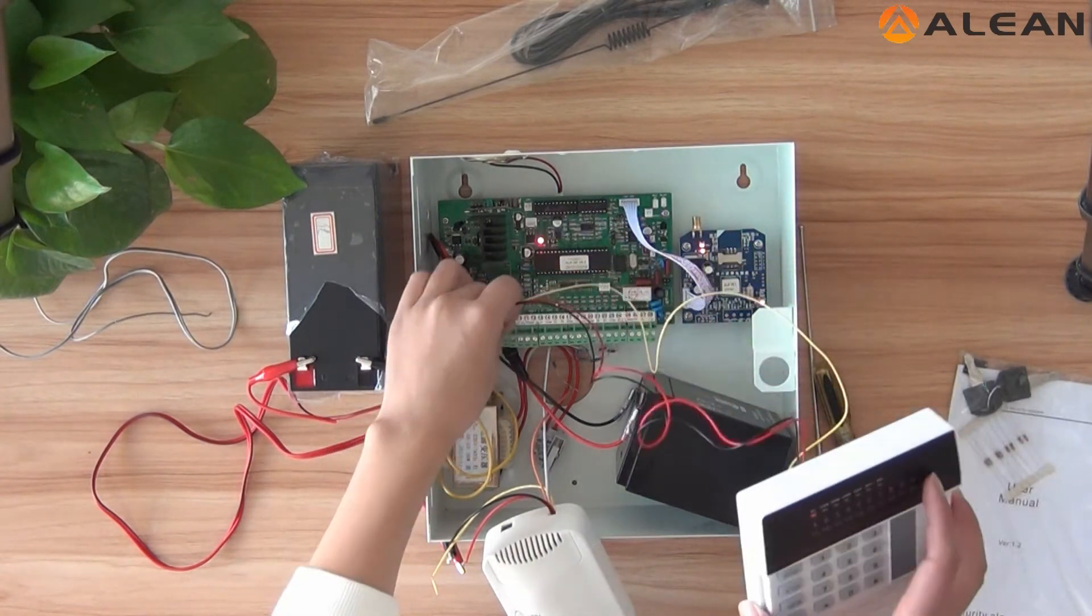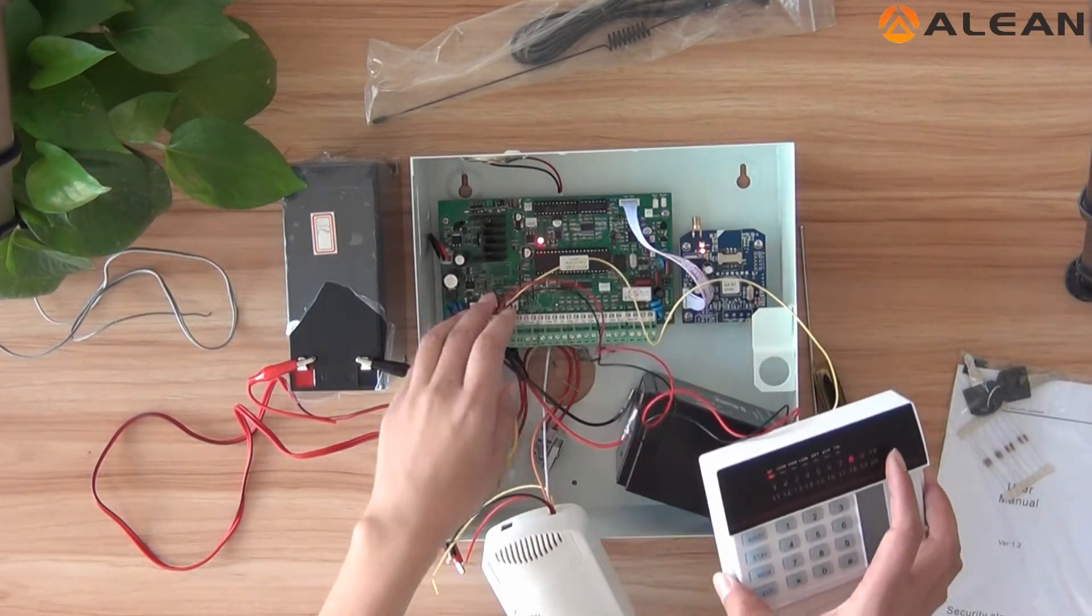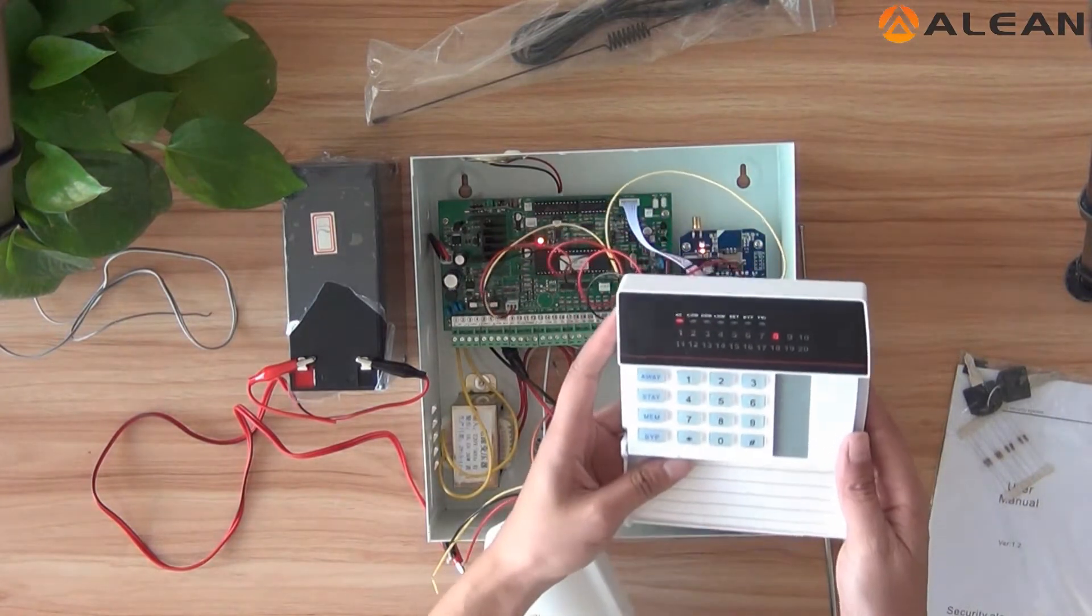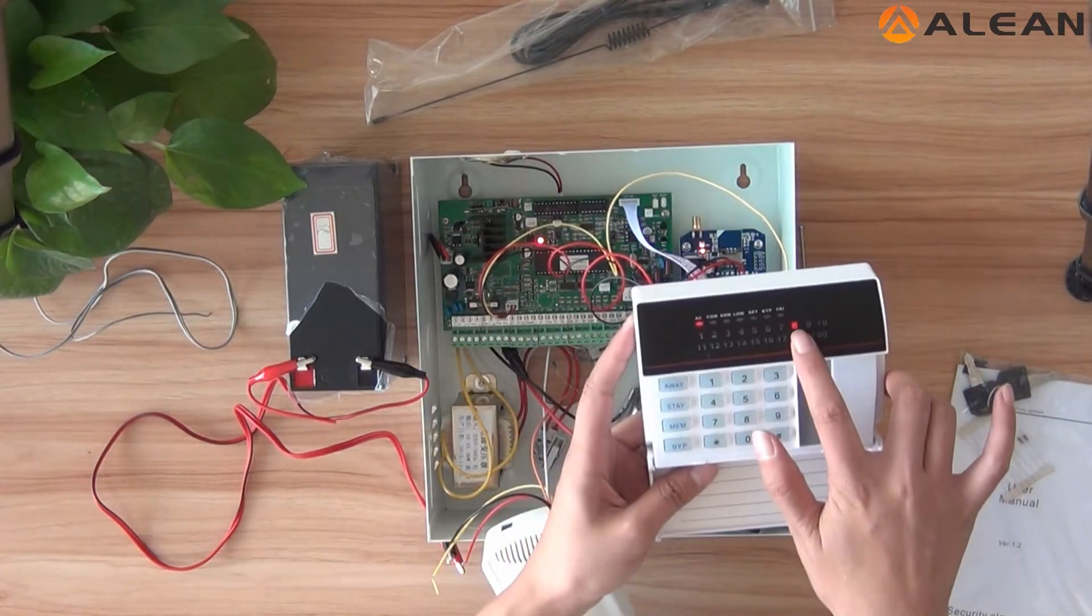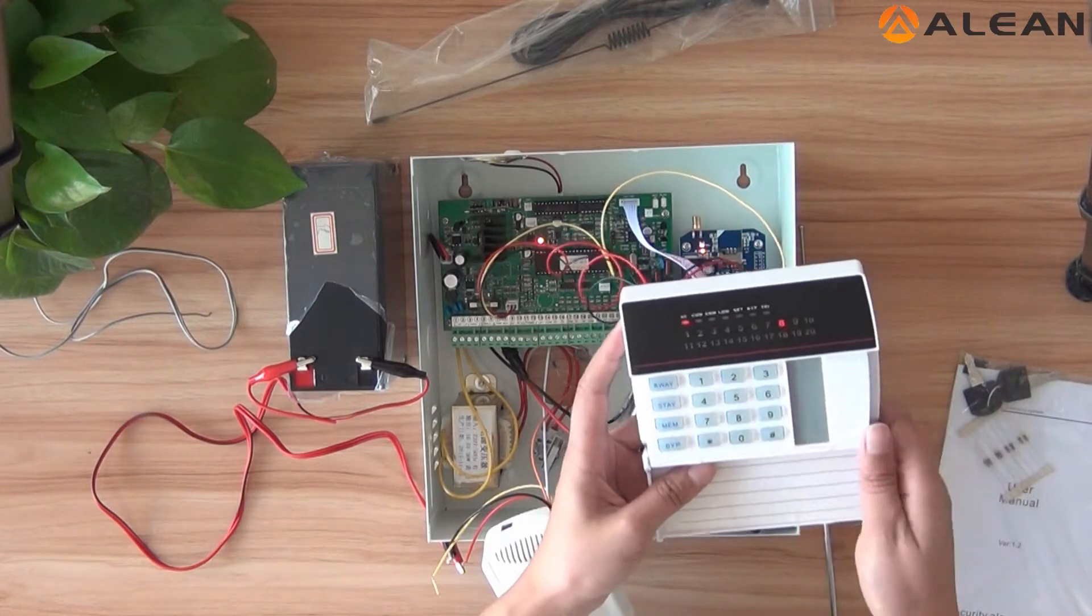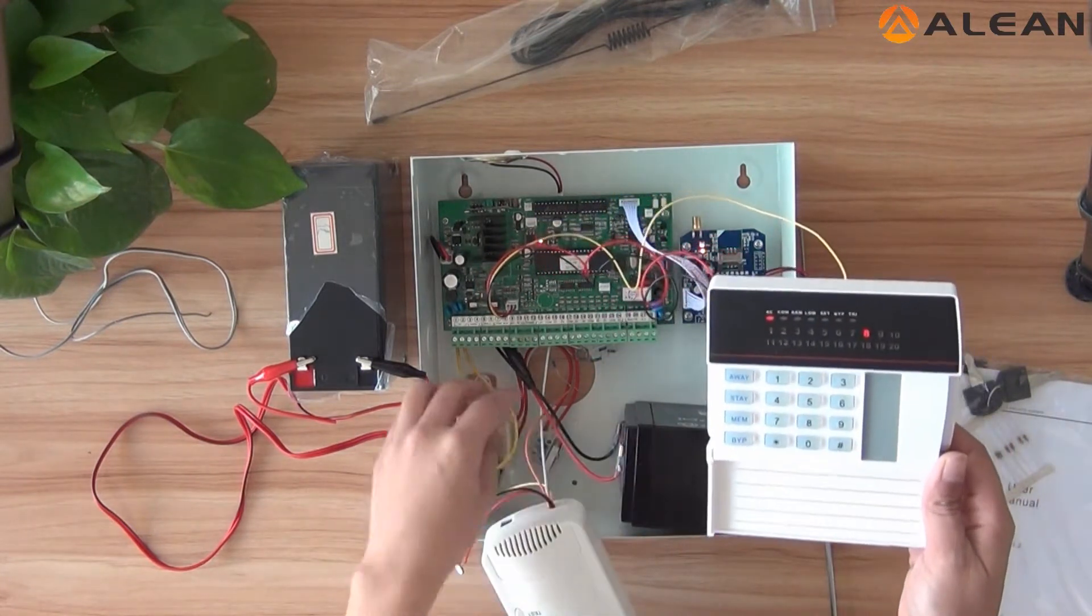Now, we have connected the keypad here. Here is the keypad. We see the 8-Zoom is flashed. We can check what's wrong with the 8-Zoom.